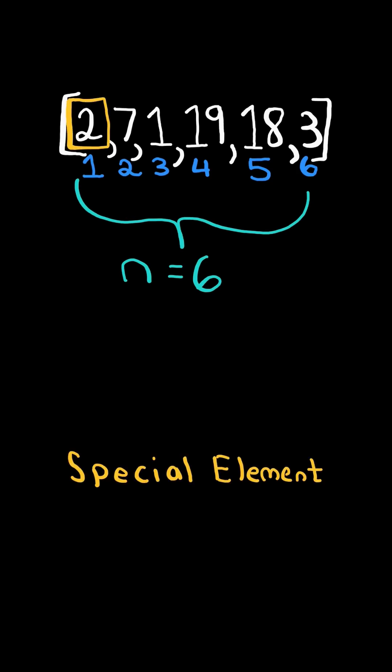An element is called special if the index divides n. In other words, if n mod index equals 0.